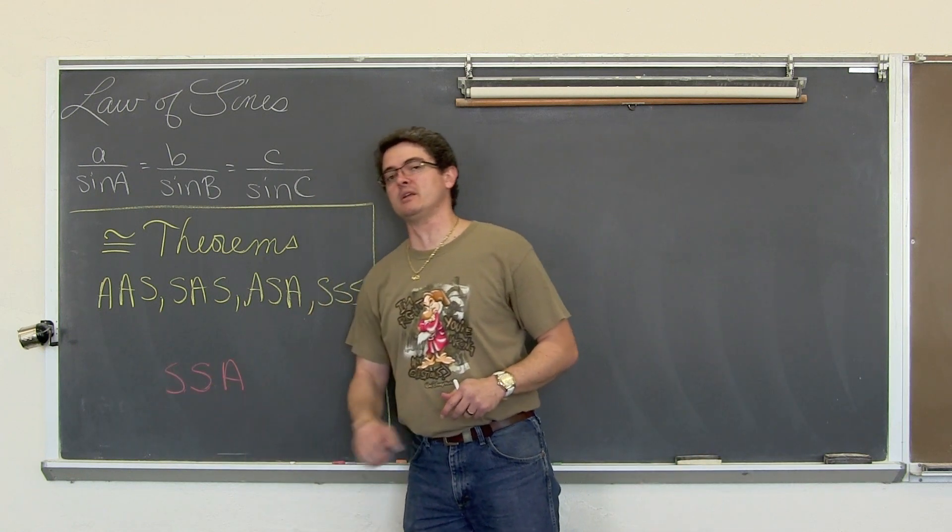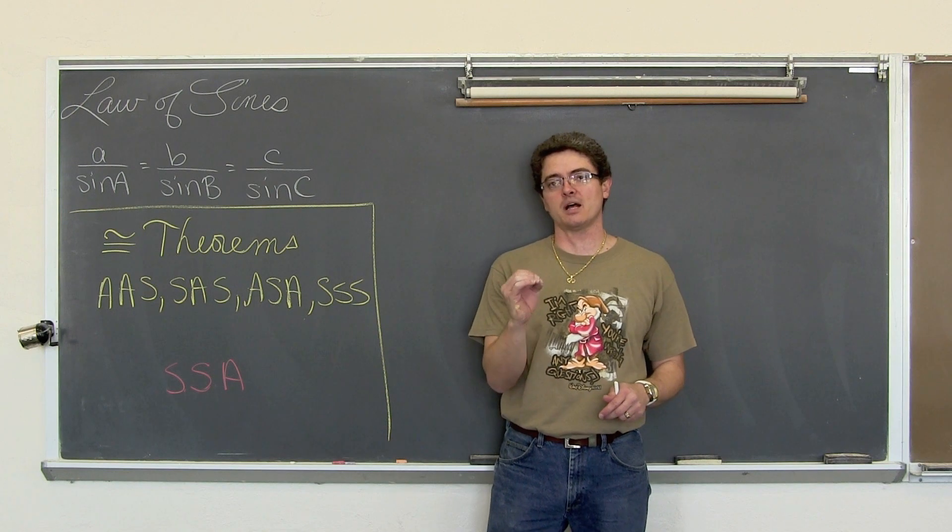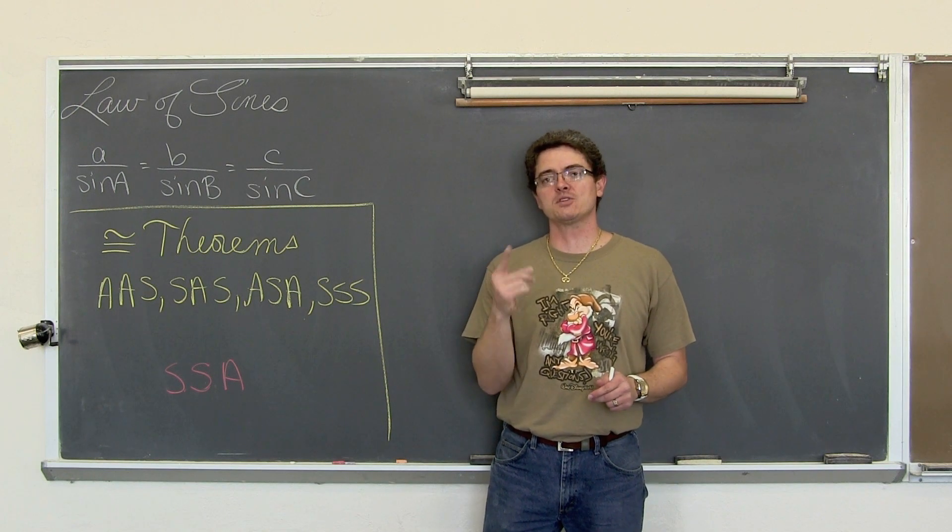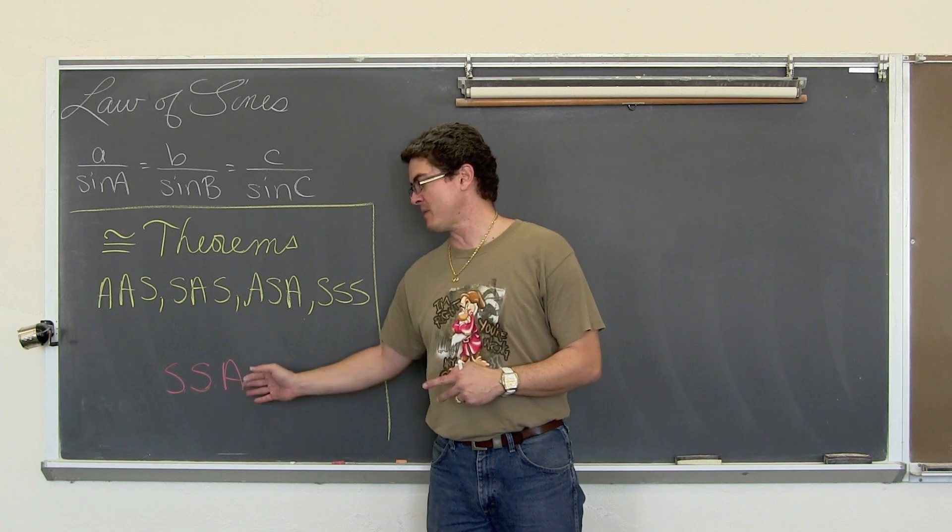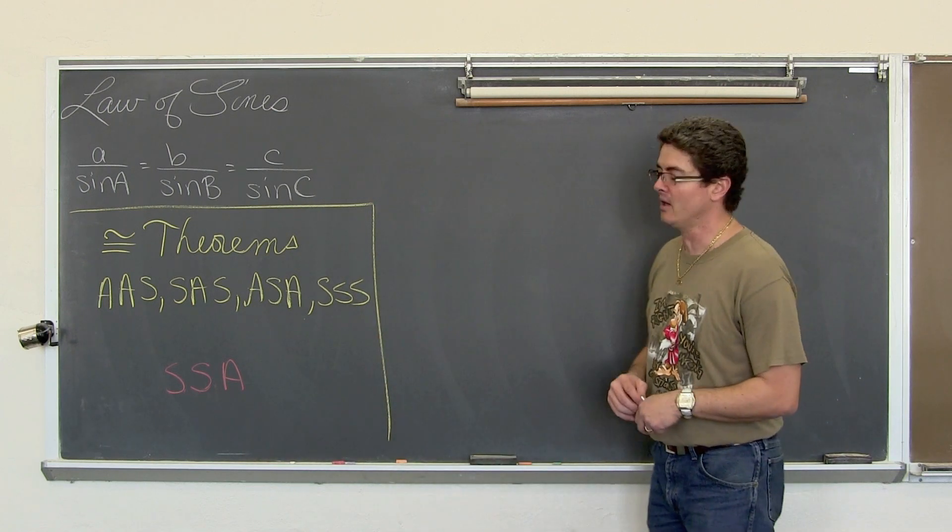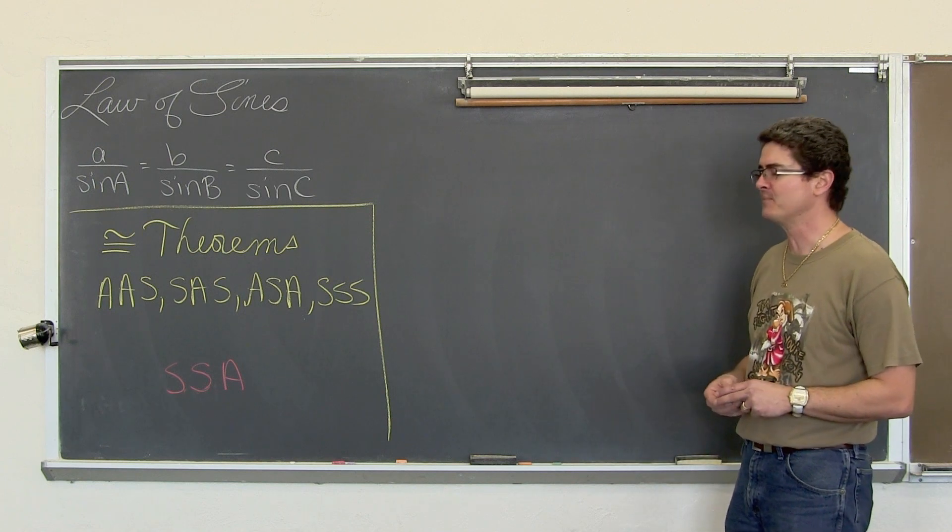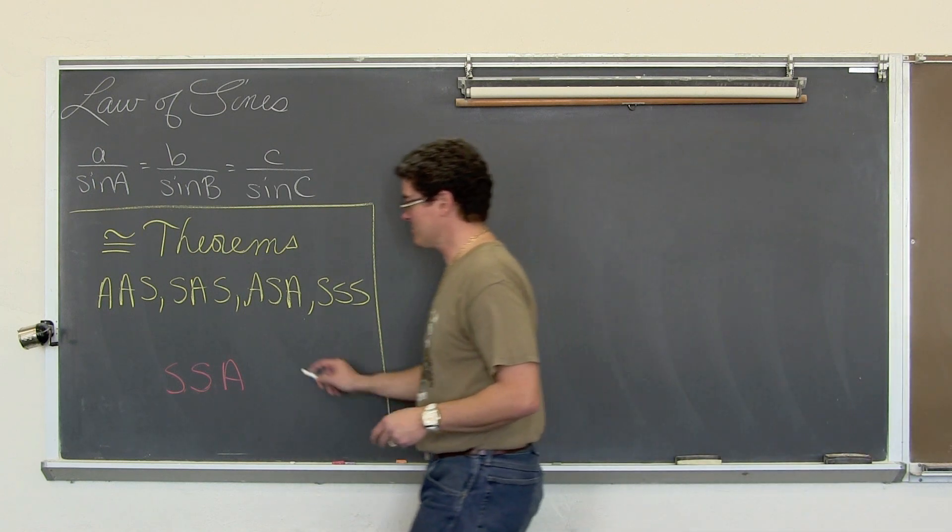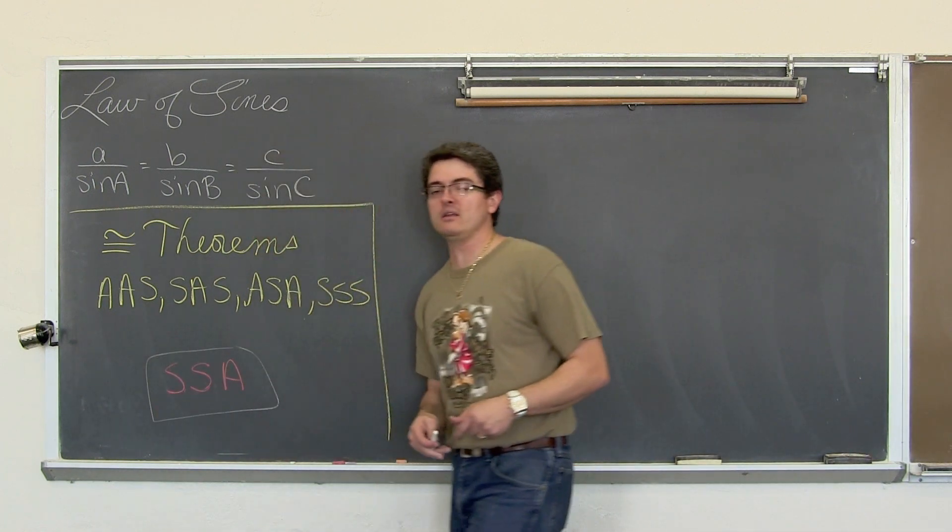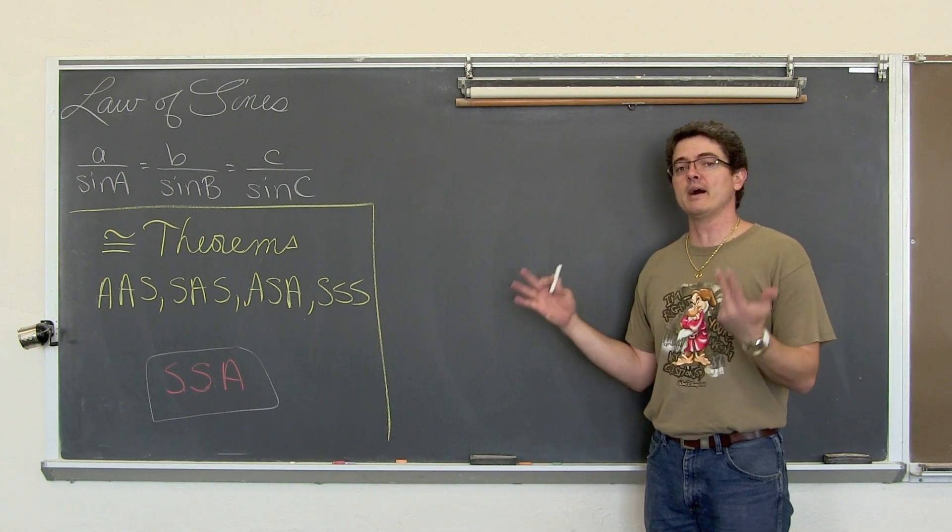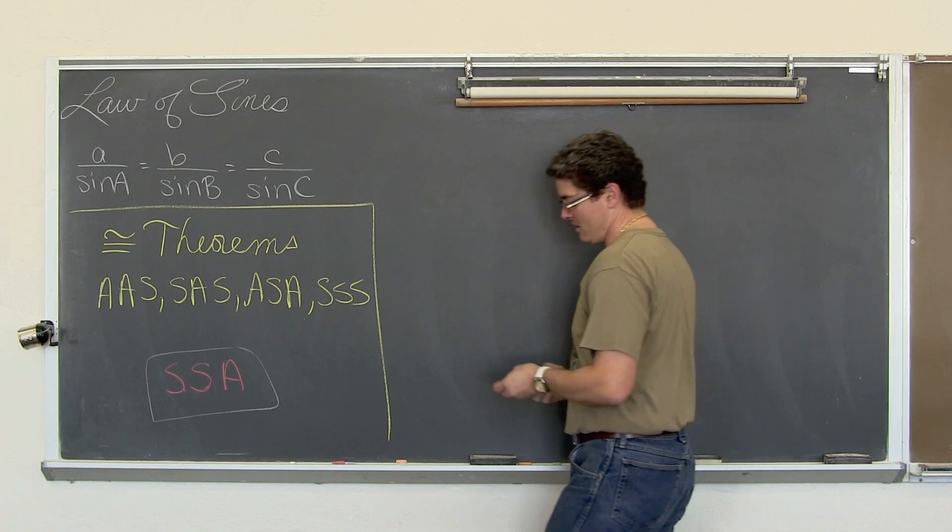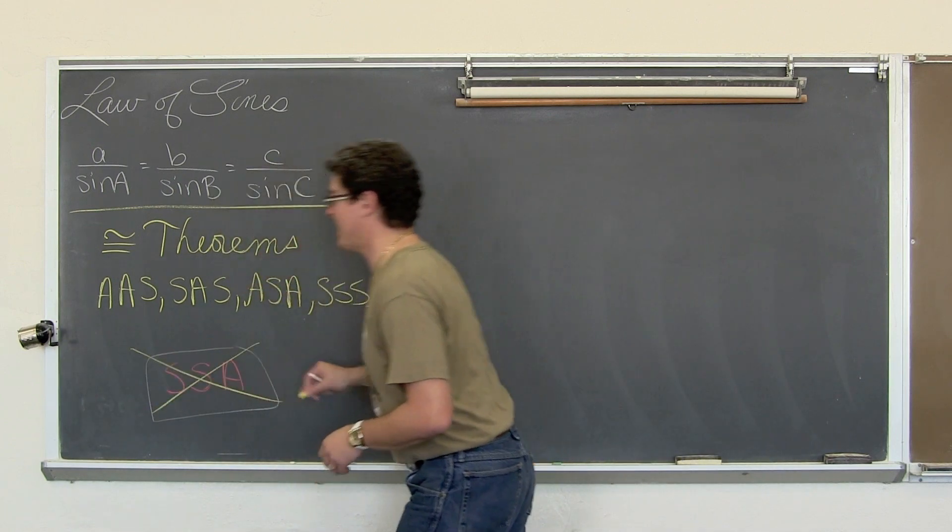That is not a congruency postulate, but some questions will give you information in this setup. If you have that, then there is a possibility of no triangle being set up, one answer or two answers. Thus, the ambiguous case for Law of Sines follows the side-side-angle pattern. It is not a congruency theorem, so you might have two answers. But that is not for this video.